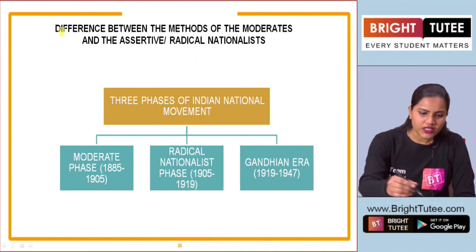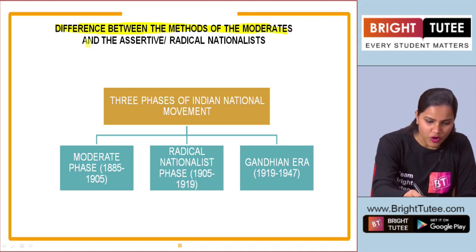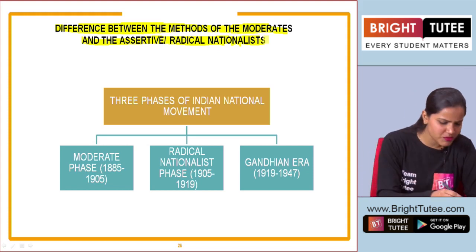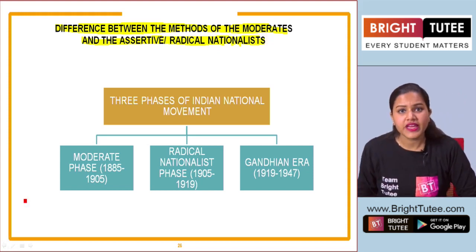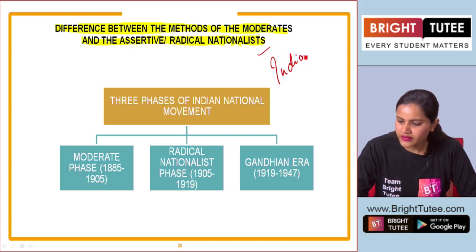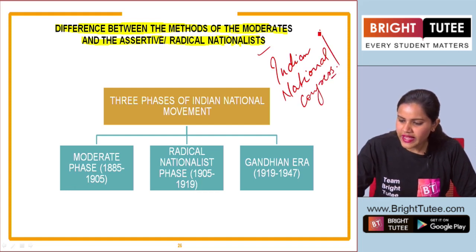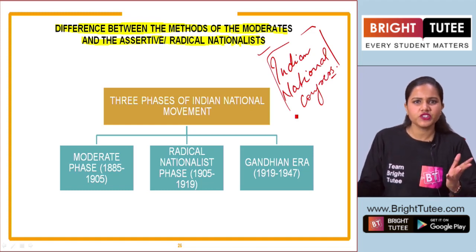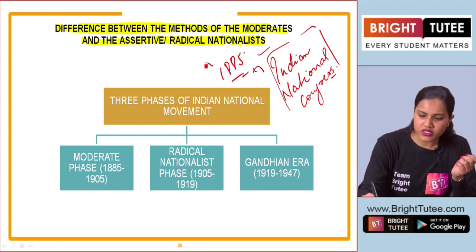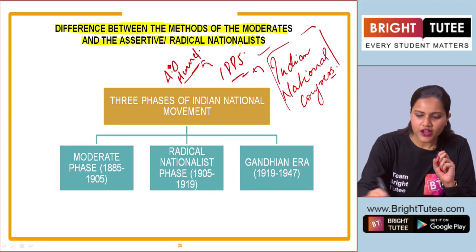Hello students, let's talk about our next topic - the difference between the methods of the moderates and the assertive or radical nationalists. Before this, we have talked about the Indian National Congress. When was the Indian National Congress formed? The answer is 1885, and the founder was A.O. Hume.